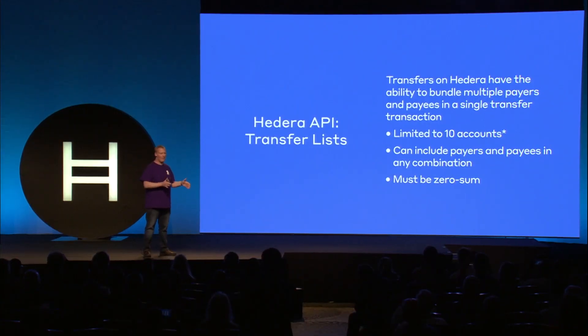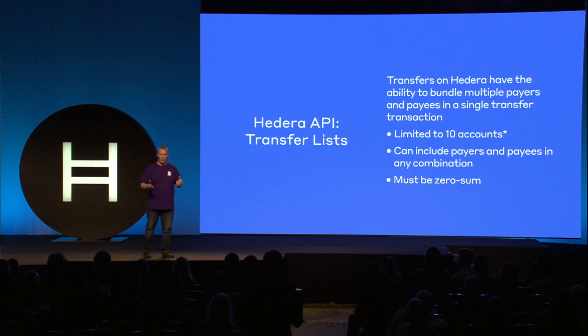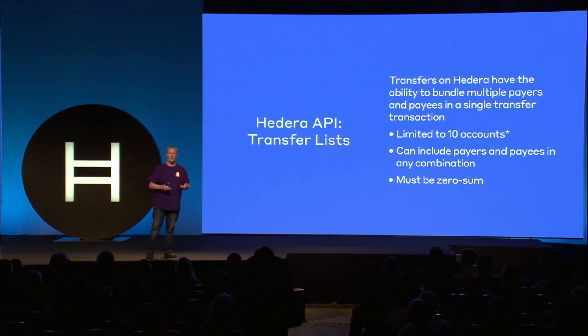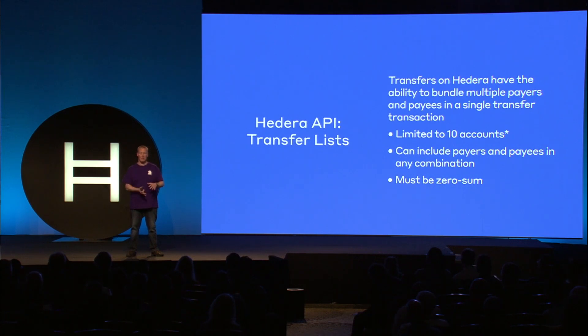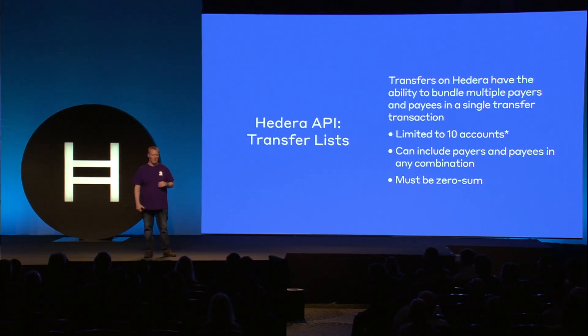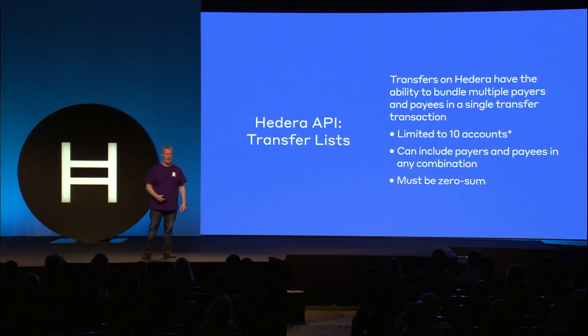Transfer lists are a really cool hidden gem in how Hedera approaches payments. You don't have to have an atomic one-to-one payment. In many use cases a facilitator charges a transaction fee or you need to distribute rewards among multiple participants — you can do that in one transaction with a transfer list, mixing and matching payers and payees. The current account limit is around 10, and the key restriction is that it must be zero-sum: the amount leaving accounts must equal the amount entering other accounts.